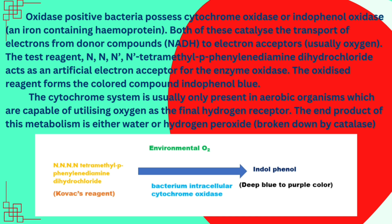The oxidase test uses N-N-N'-Tetramethyl-P-Phenylenediamine Dihydrochloride (TMPD). This acts as an artificial electron acceptor for enzyme oxidation. This oxidized reagent forms a colored compound — that is, indophenol blue.